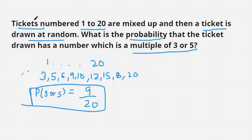A drawn ticket has a number which is a multiple of either 3 or 5. I hope you understood. This is our final answer. Till then, bye bye!